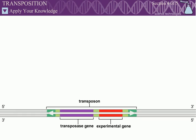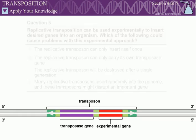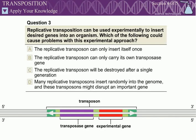Replicative transposition can be used experimentally to insert desired genes into an organism. Question 3: Which of the following could cause problems with this experimental approach?